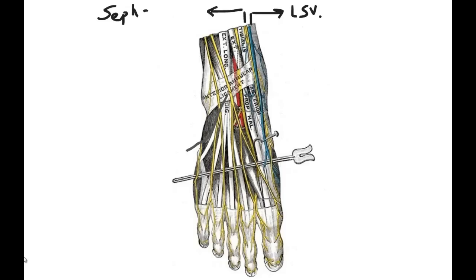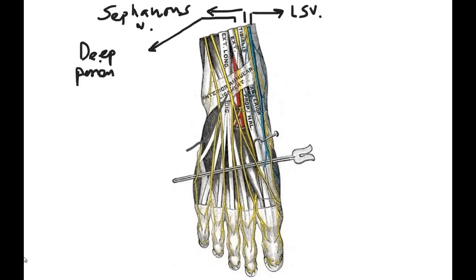The saphenous nerve comes downwards and crosses the anterior middle part of the ankle in relationship with the long saphenous vein. Therefore, giving an injection around the long saphenous vein — between the extensor hallucis longus tendon and the medial malleolus — can help block the saphenous nerve. Behind, and medial to, the extensor hallucis longus tendon lies the deep peroneal nerve.